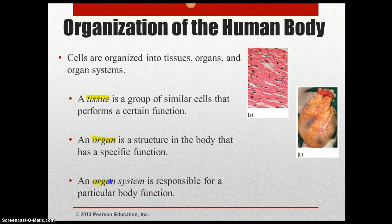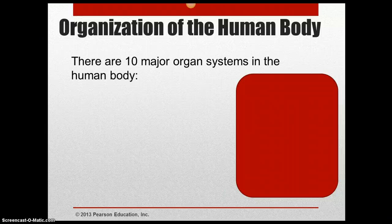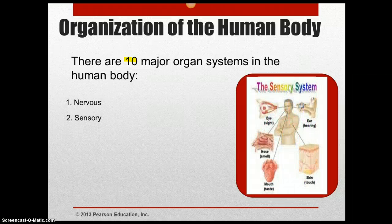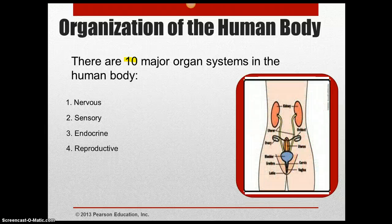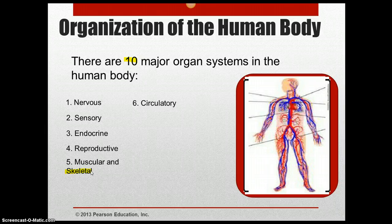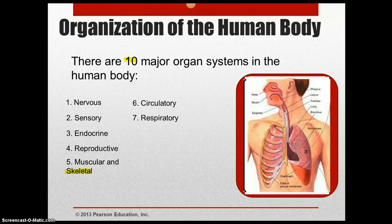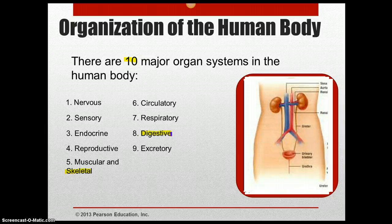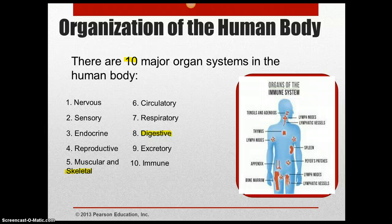An organ system is responsible for a particular body function. When multiple organs work together, they make up our organ systems. We have ten major organ systems in our bodies. The first is our nervous system, second is our sensory system, third is the endocrine system, fourth is the reproductive system, fifth we have our muscular and skeletal systems, sixth is the circulatory system, eighth is the digestive system, ninth is the excretory system, and finally we have our immune system.